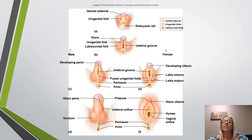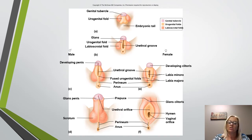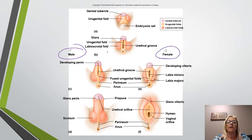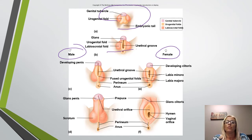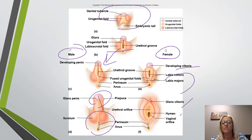The external genitalia of a fetus can be distinguished as male or female by about 12 weeks after fertilization. The external reproductive organs begin to differentiate from precursor structures — they all begin the same and then differentiate. For the male it develops into the penis, glans penis, and scrotum. For the female, the same structures develop into the clitoris, labia minora and majora, glans clitoris, hymen, and vaginal orifice. The precursor structures include the genital tubercle, urogenital folds, and labioscrotal folds.